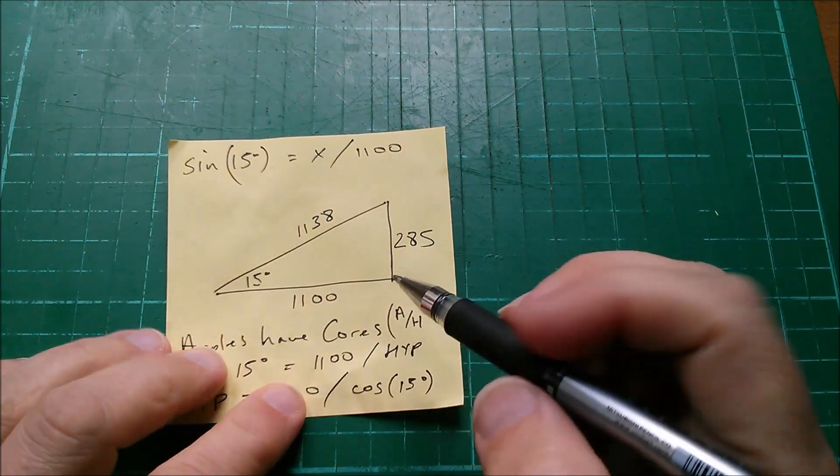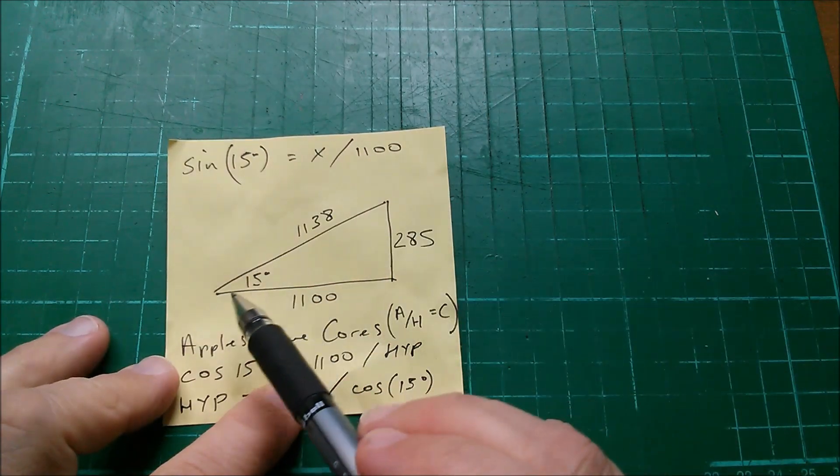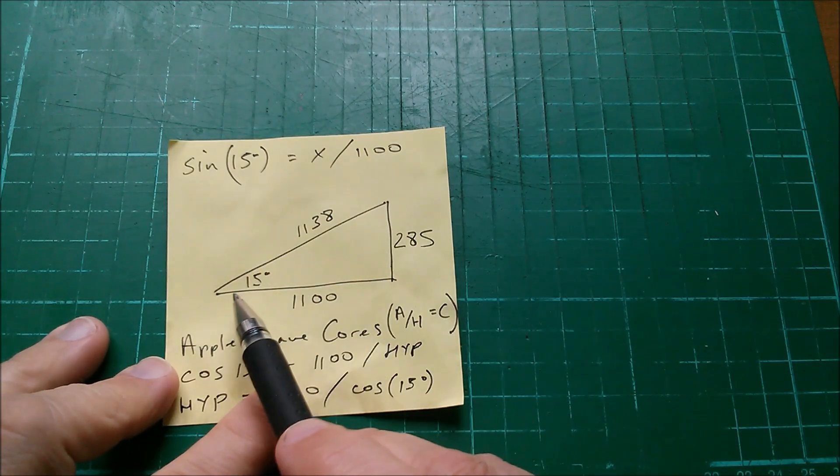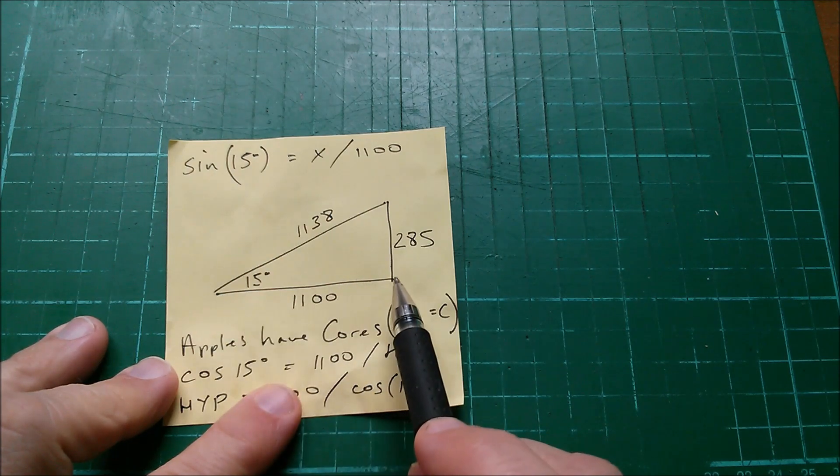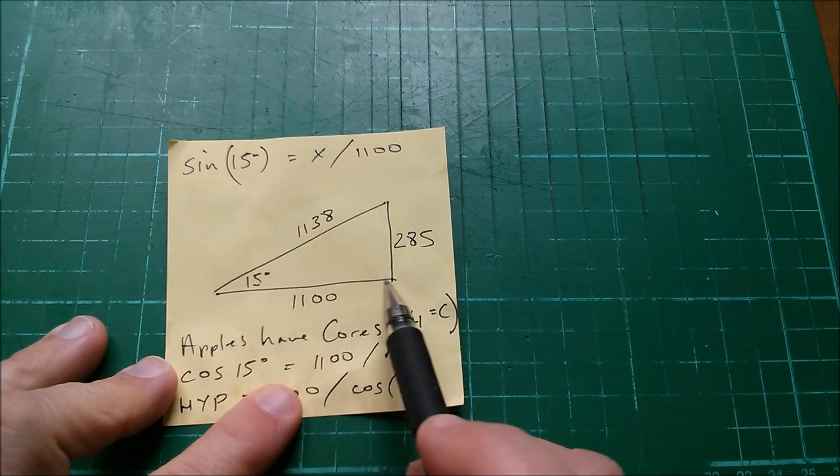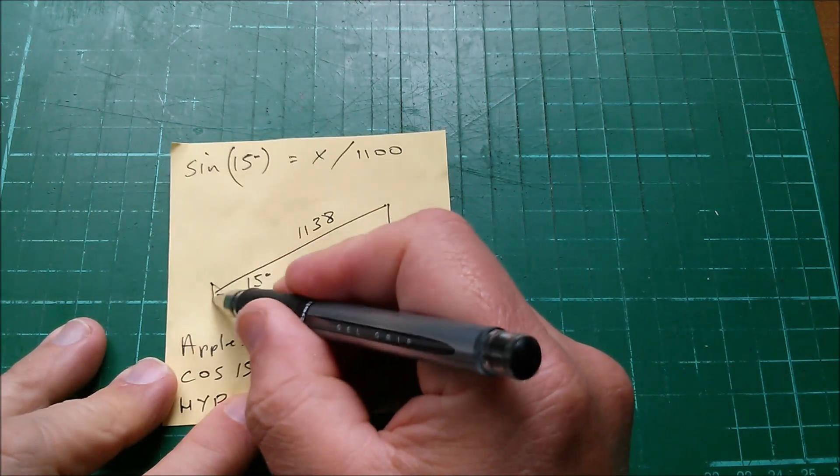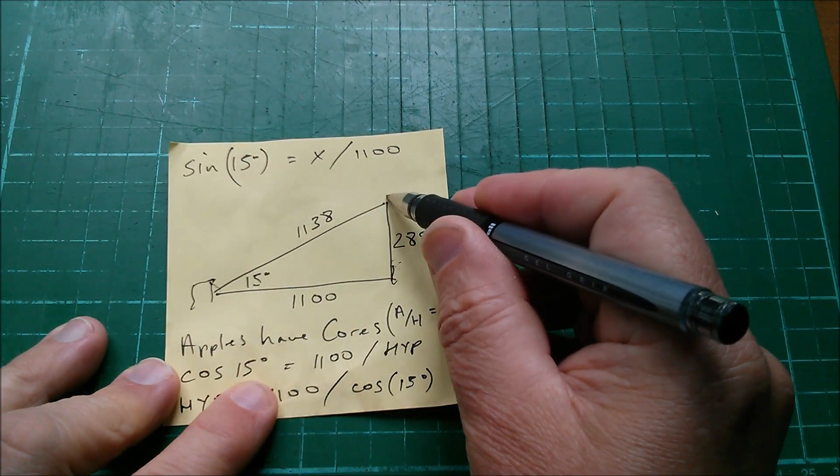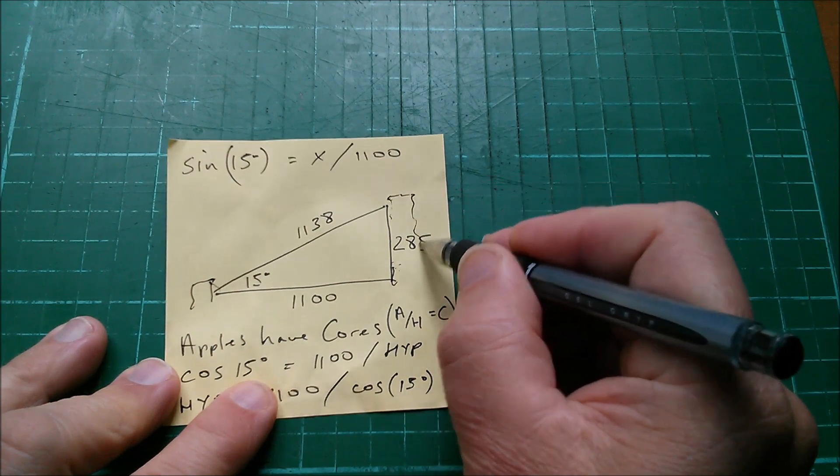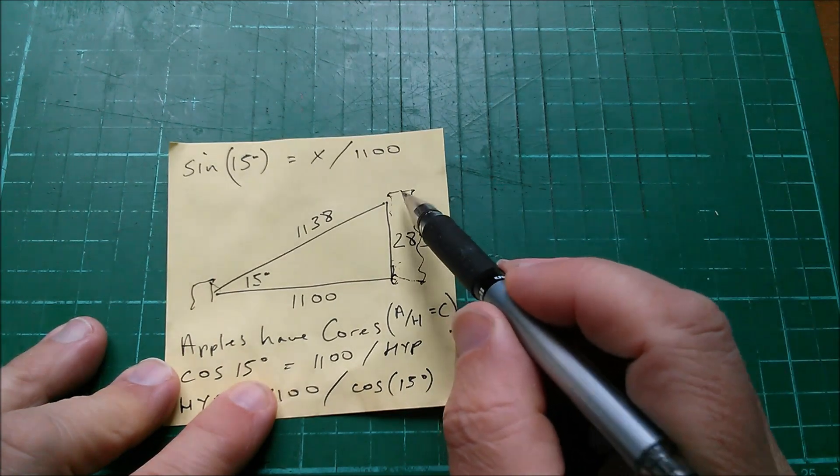Here's my trigonometric calculation for the roof angle which I chose to be 15 degrees. So given an 1100 span between posts, there will be a post there and a post there which comes up higher of course. This is the apex post.